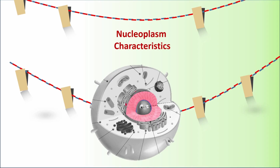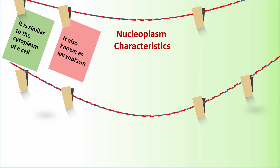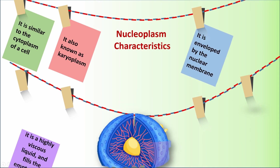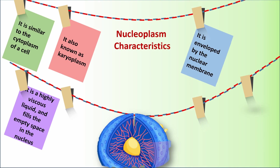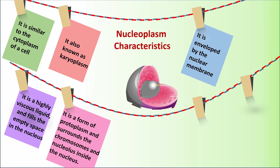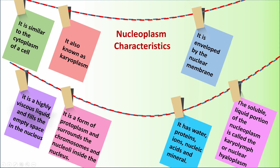Nucleoplasm characteristics. It is similar to the cytoplasm of a cell. It is also known as karyoplasm. It is enveloped by the nuclear membrane. It is a highly viscous liquid and fills the empty space in the nucleus. It is a form of protoplasm and surrounds the chromosomes and nucleolus inside the nucleus. It contains water, proteins, ions, nucleic acids, and minerals. The soluble liquid portion of the nucleoplasm is called the karyolymph or nuclear hyaloplasm.